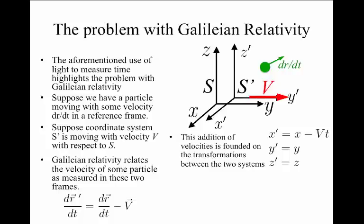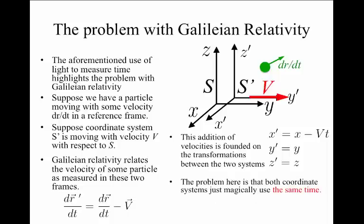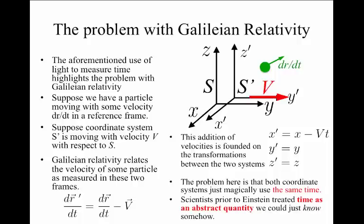The problem with this formulation is that the relationship between the two coordinate systems uses the same time. It's kind of supposing that time is an abstract or absolute quantity that we could just know. This is very much in contrast with Einstein's formulation, where we say that time is a measurement tool and we actually have to evaluate time using the propagation of the speed of light.